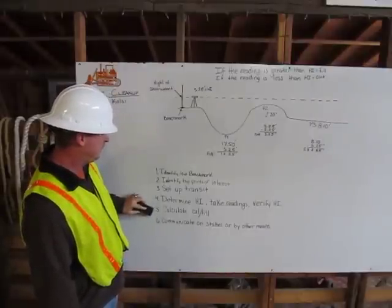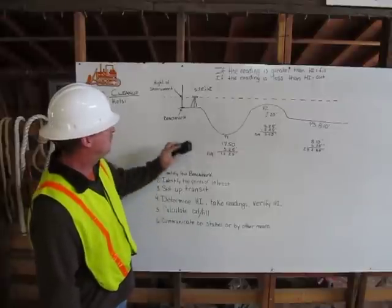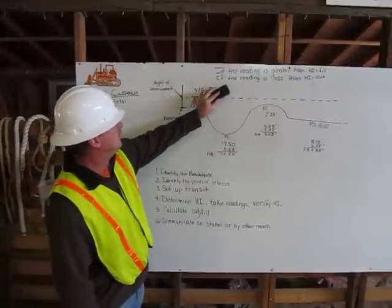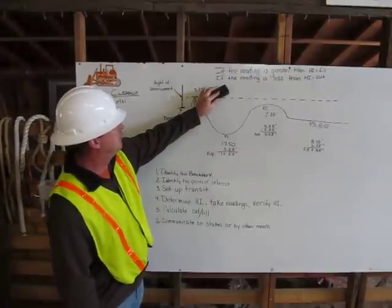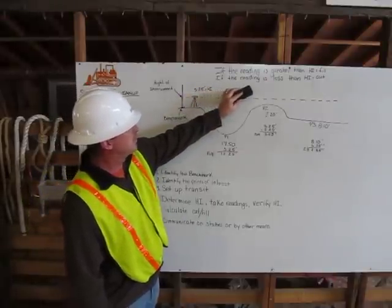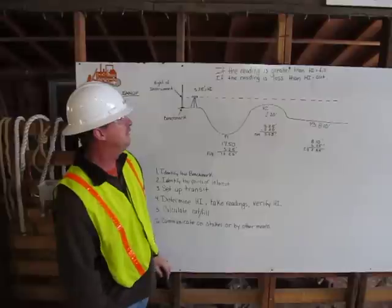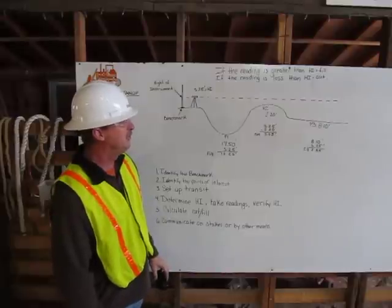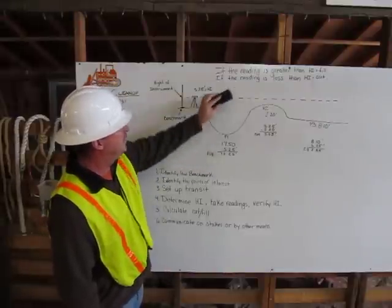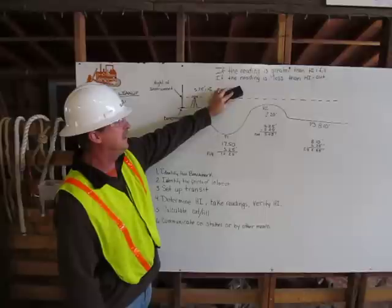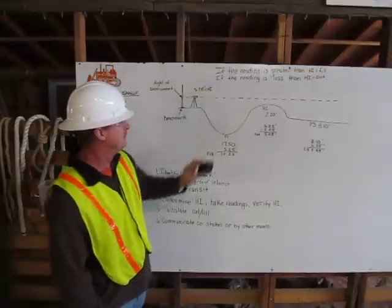Next, I want to calculate cut and fill. My rule of thumb on cut and fill will be: if the reading is greater than the height of instrument, means I'll be filling, and if the reading is less than the height of instrument, means it'll be a cut.